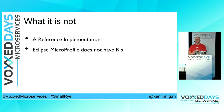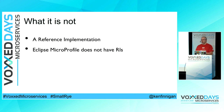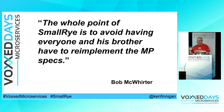So what SmallRye is not, which is very important to get right — it's not a reference implementation. Eclipse MicroProfile specifications do not have reference implementations, not like Java EE did in the past where each JSR must have a specific reference implementation before it can be released. SmallRye is not that. The whole point of SmallRye is to avoid everyone having to create the same thing over and over again just because you want to implement MicroProfile.